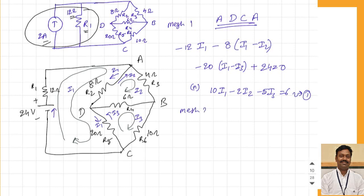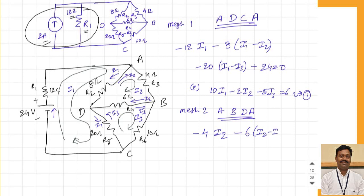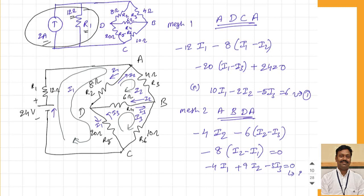Applying to mesh 2 (A, B, D, A): from A to B through the 4 ohm resistance, current I2 gives minus 4 times I2. Through the 6 ohm resistance, two currents I2 and I3 give minus 6 times (I2 minus I3). Through the 8 ohm resistance, currents I2 and I1 are present. Completing the loop and equating to zero, simplifying gives: minus 4 times I1 plus 9 times I2 minus 3 times I3 equals zero. This is equation number 2.